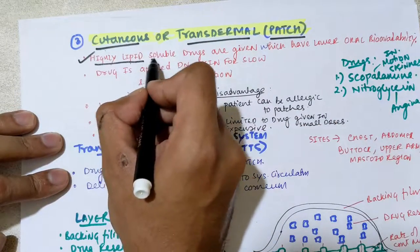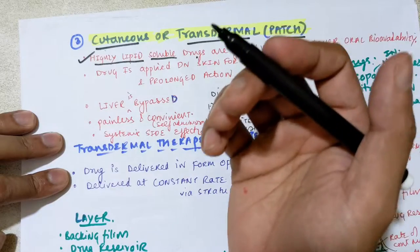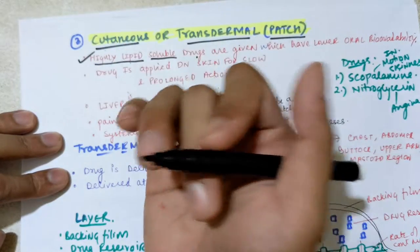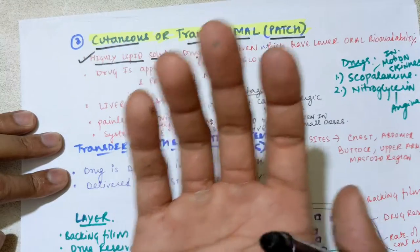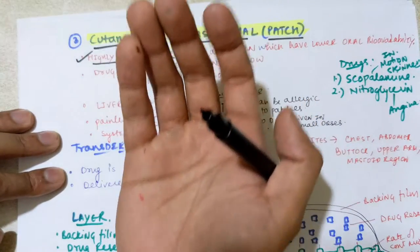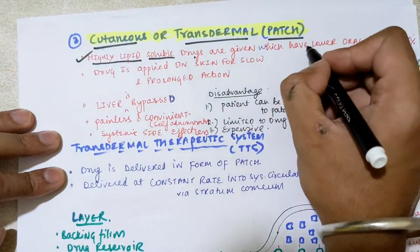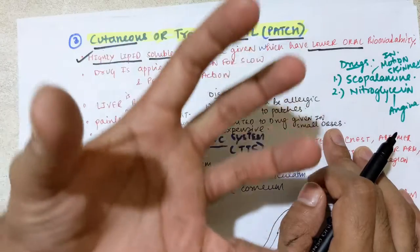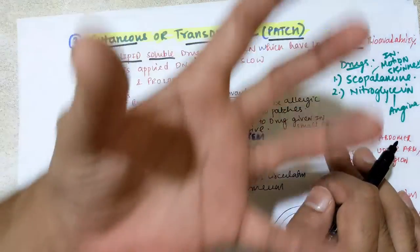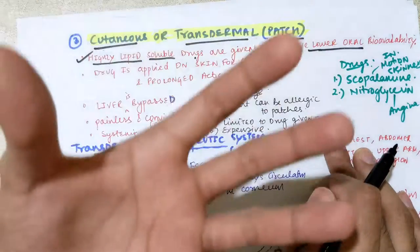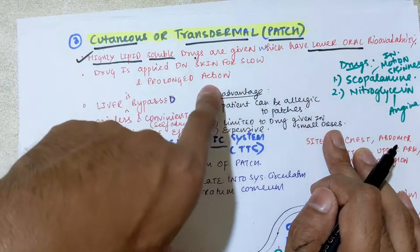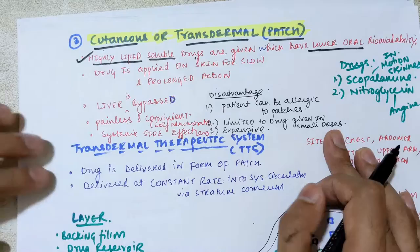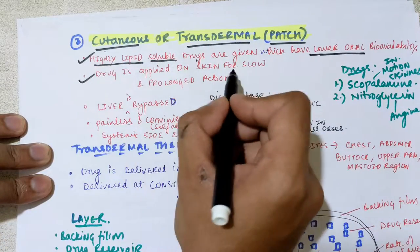Let's discuss the characteristics of the transdermal route. Only highly lipid-soluble drugs can be given because the skin is made up of a lipid bilayer, so you cannot administer a drug that is not lipid-soluble. Additionally, drugs with lower oral bioavailability are candidates — if a drug has very low oral bioavailability, you can alternate to the transdermal route.